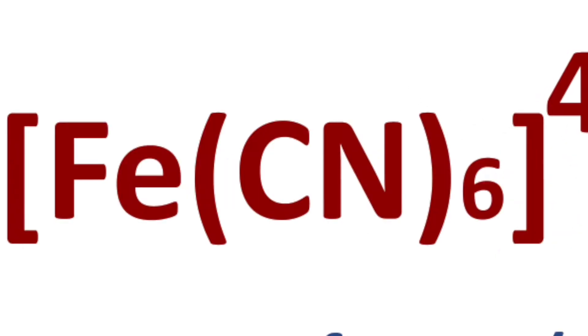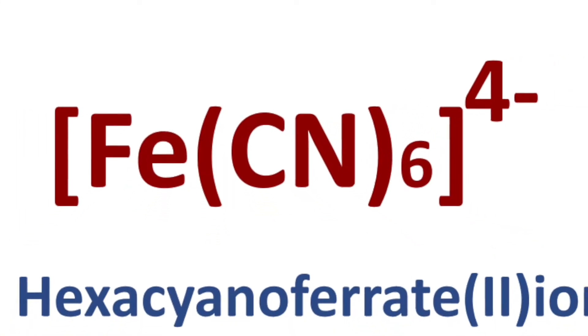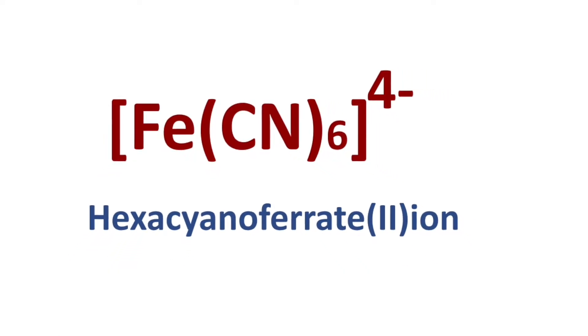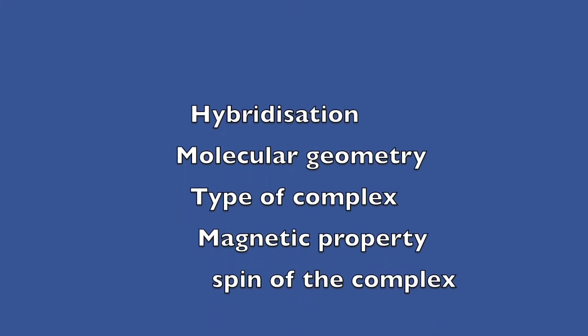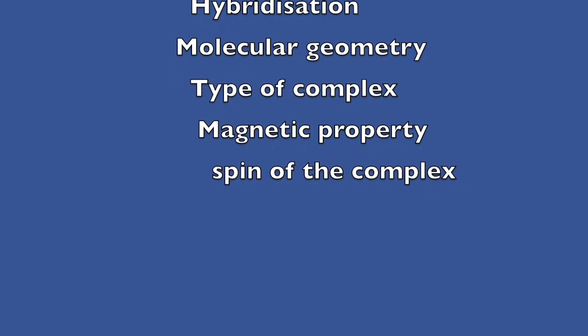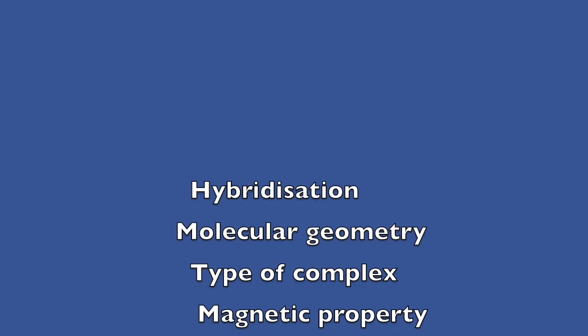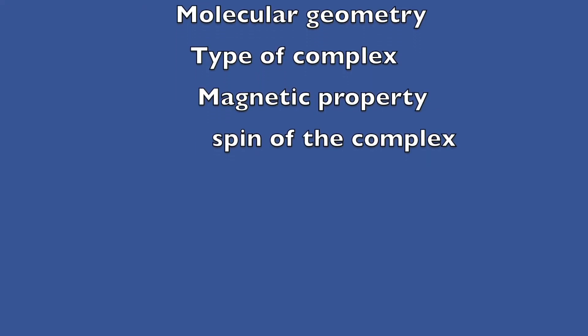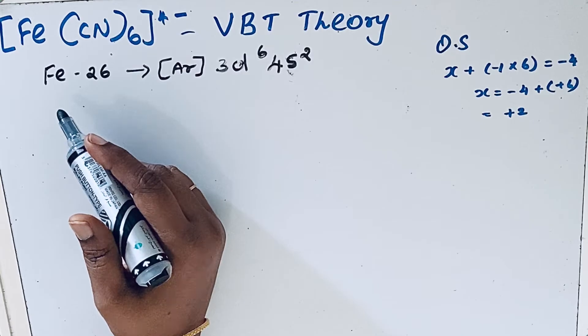Welcome to Aurora Chemistry for Everyone. In this video we will discuss chemical bonding in [Fe(CN)6]4- based on VBT theory. We will also discuss hybridization, molecular geometry, and magnetic property of this complex.